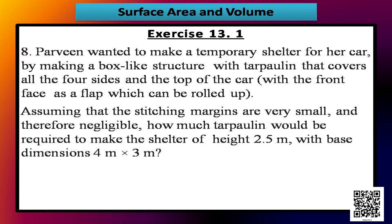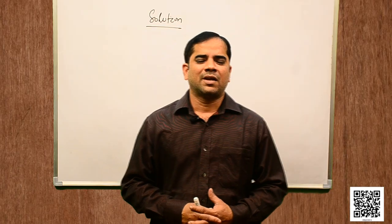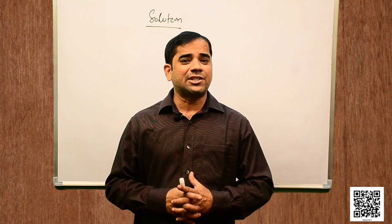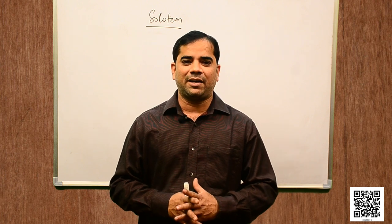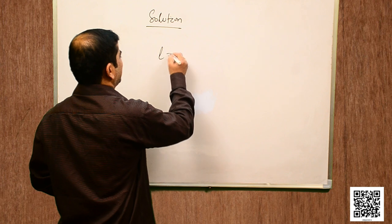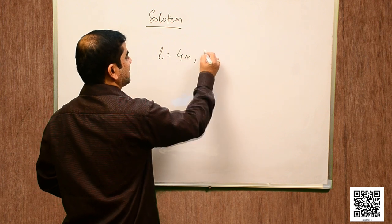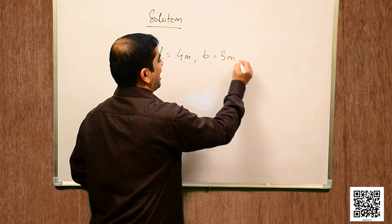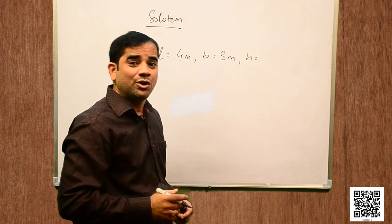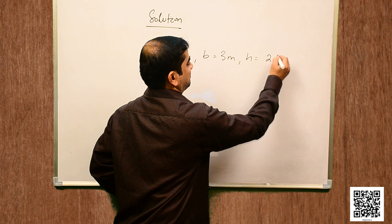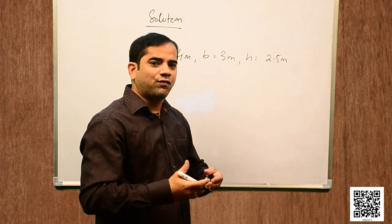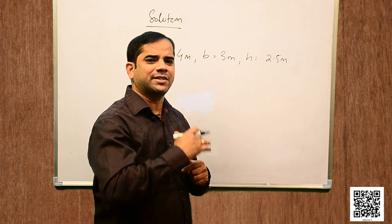Let us discuss the solution. As per the given data, the dimensions of the box-like car cover are: length = 4 m, breadth = 3 m, and height = 2.5 m. Tarpaulin is required only for the 4 sides and top of the shelter.